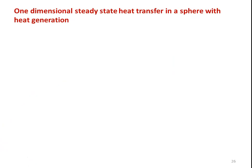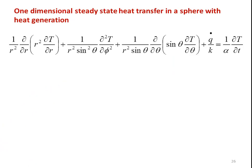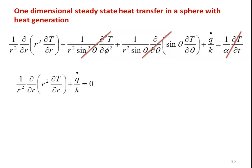Now we take up one-dimensional steady-state heat transfer in a sphere with heat generation. This is the general heat conduction equation for the sphere, with radial, azimuthal, and polar direction terms plus an unsteady-state term. Simplifying for one-dimensional steady-state: the azimuthal and polar direction terms drop, and the time-variation term drops. The remaining governing equation is (1/R²)·(d/dR)(R²·dT/dR) + Q̇/K = 0.